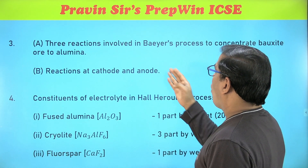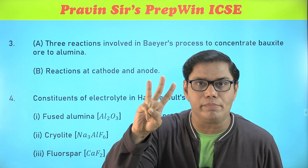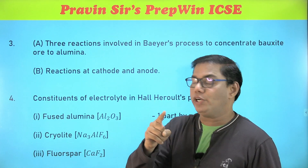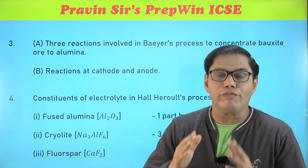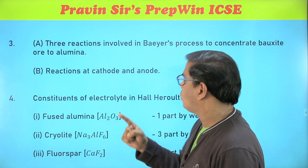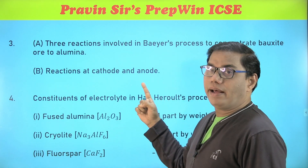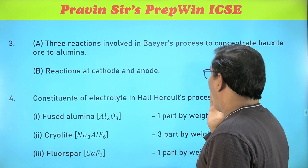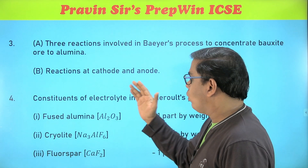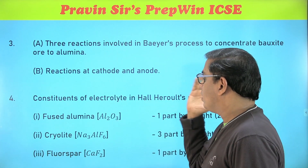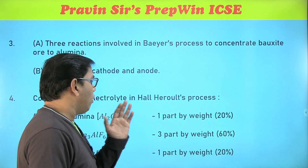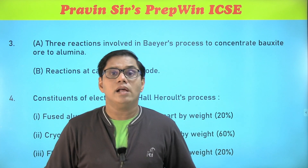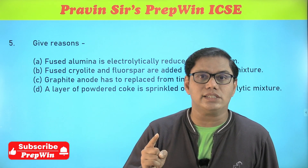One is the reaction involved in Bayer's process — there are three chemical reactions; I have covered this in one of my videos, please watch that if you are not clear about it. If not that reaction, this is a sure-shot reaction at the cathode and anode. Prediction number four is the constituent of the electrolyte in Hall's Heroult process — we use three chemical compounds, their names, molecular formulas, and the weight percentage in which they are used. This is very very important.